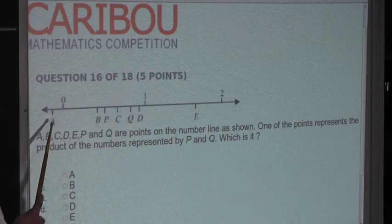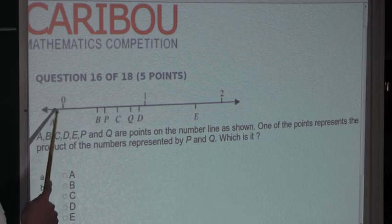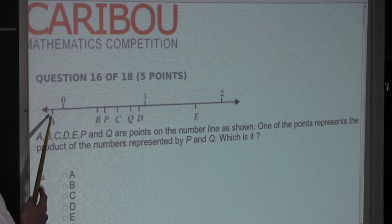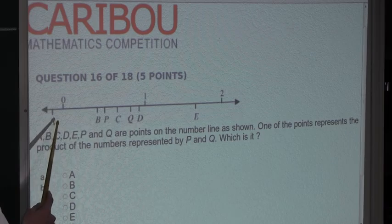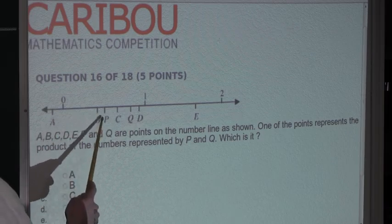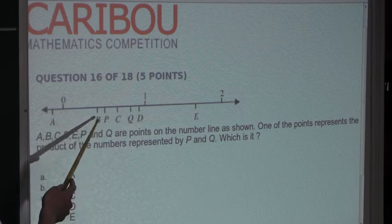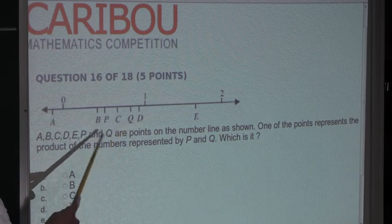So we already know if we look at A, this A is less than 0, so we know that A is negative. But we know that the product of P and Q can't be negative because both numbers are within 0 and 1 and are not negative. So we know that it already cannot be A. And the only variable to the left of P, other than A, is B. So we know that the product of P and Q must be B.